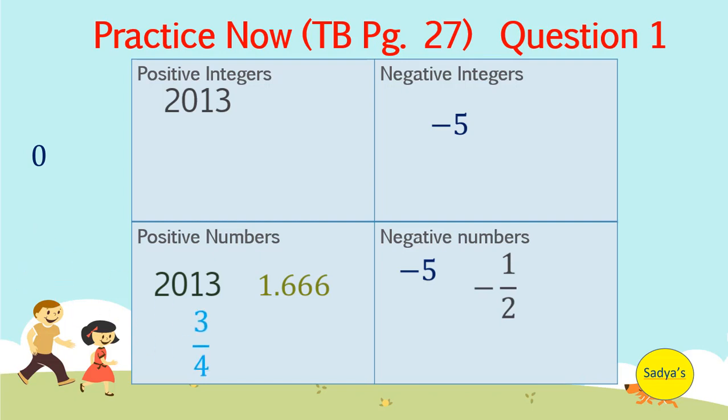3 by 4 is a positive number. Negative 3.8 is a negative number. Negative 2 by 3 is a negative number. 6 is a positive number and a positive integer. Negative 17 is a negative number and a negative integer.